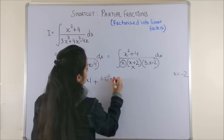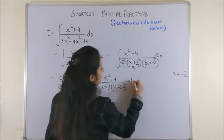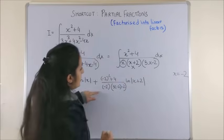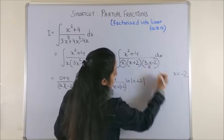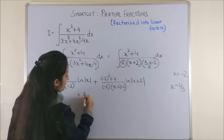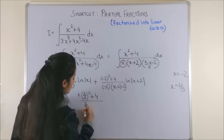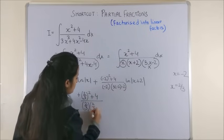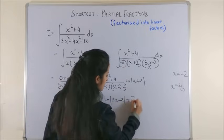Substituting, log mod x plus two. And lastly, putting this equal to zero, this gives us x equal to two by three. So plus two by three whole square plus four upon two by three into two by three plus two, log mod three x minus two plus c.